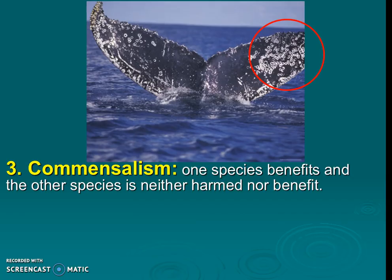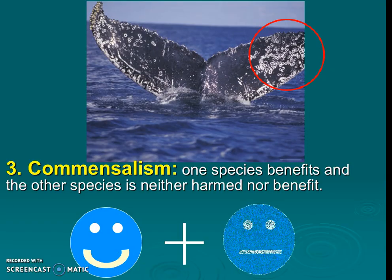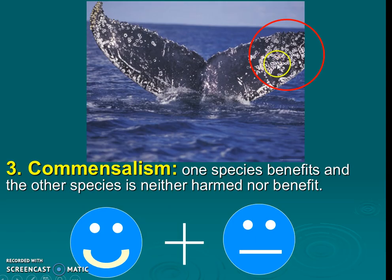Next is commensalism, where one species benefits but the other is neither harmed nor benefited — it simply doesn't care. A great example is barnacles living on a whale. The whale doesn't care that the barnacles are there, but the barnacles get a free ride and access to food. The whale is completely unaffected.